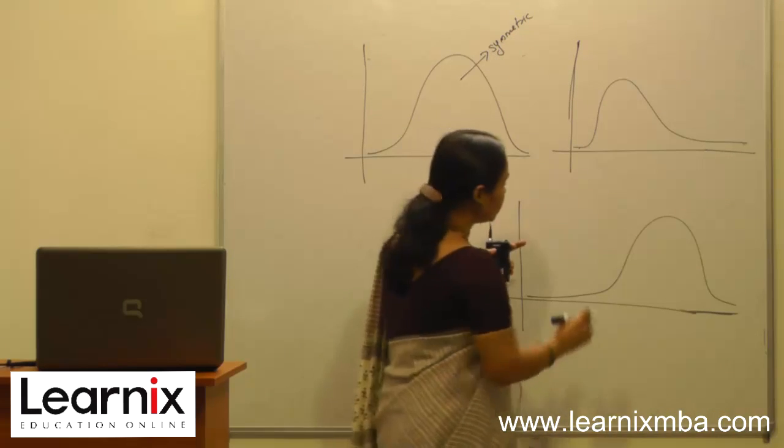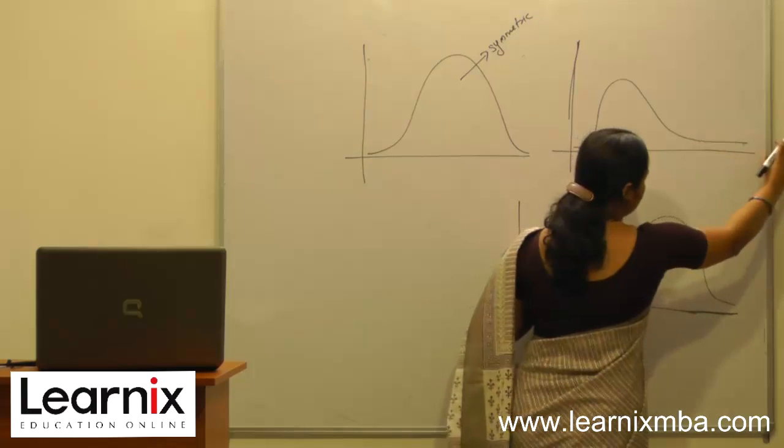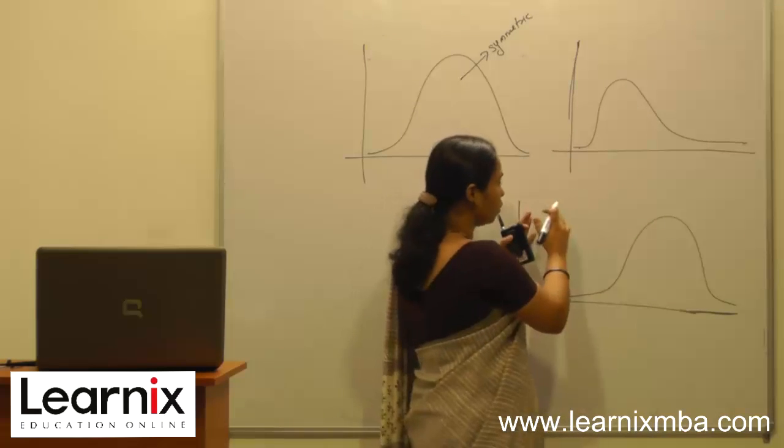Here in this diagram you can see that the tail is towards the right side. There is a long tail towards the right side and most of the data is concentrated around the left side.